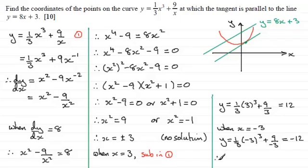So therefore what we've got are the points, the coordinates then. When x is 3 we end up with y being 12, and when x is minus 3 we see that y is minus 12. So there's our two points.